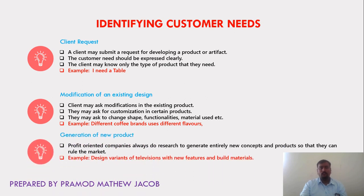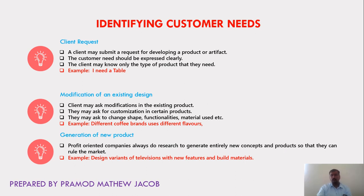Next is generation of an entirely new product. Most profit-oriented companies always do research to generate entirely new concepts and products so that they can rule the market. For example, most electronics companies are competing with each other to generate new televisions with new features and build materials. Televisions used 20 years before were of CRT type, then changed to LED, LCD, 3D viewing, plasma TV, etc. Every competing company delivers new products with entirely new features by doing a lot of research.